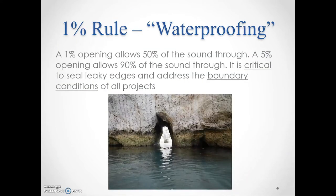The one percent rule: think of soundproofing like waterproofing. A one percent opening allows 50% of sound through; a five percent opening allows 90% of sound through. These are rules of thumb, but the point is clear — it is critical to seal leaky edges and address all boundary conditions. This is what we call a flanking path: a gap or structure-to-structure contact that allows sound to pass through.